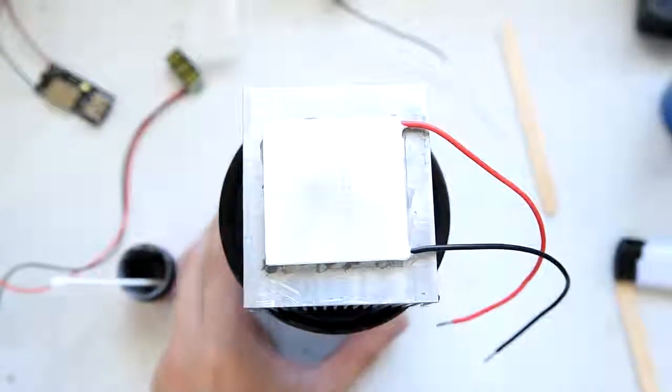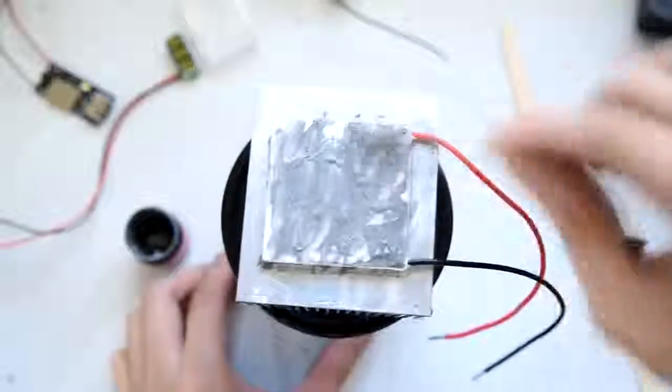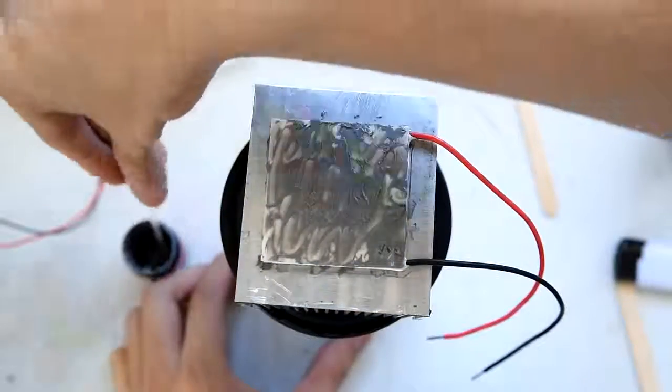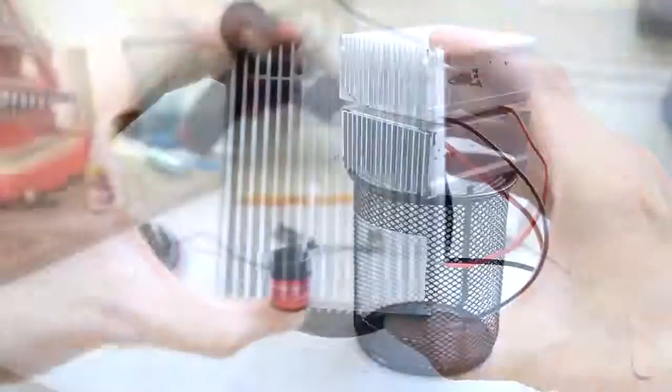Then again, use a swab to apply a generous amount of thermal paste on the other end of the peltier. Once done, it's time to install the upper heatsink. Mash it as if you were putting back an Oreo.